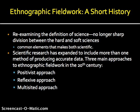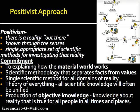Scientific research has expanded to include more than one way of producing accurate data. The three main approaches to ethnographic fieldwork in the early 20th century have been the positivist, reflexive, and multi-sided approaches. In positivism, you go out and form a hypothesis based on the issues and a literature review, then make observations, conduct an experiment, organize and analyze the data, and report on your results after drawing conclusions.